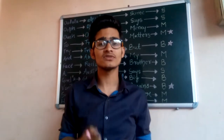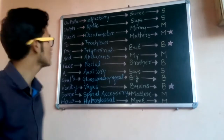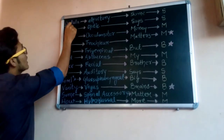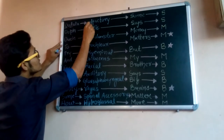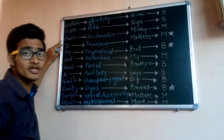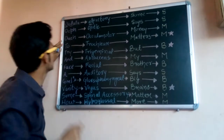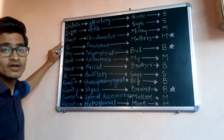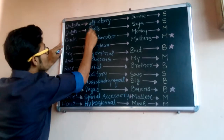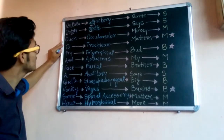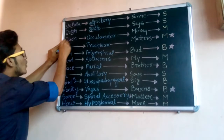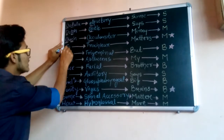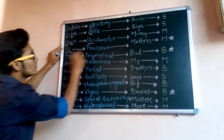Now I'll explain how we can identify the names of cranial nerves using this mnemonic. 'Oolala' contains O and L, so it means the starting two letters will be OL — that is olfactory nerve. After that, O and T means optic, which is the second pair. Then OC in 'out' means oculomotor. After that, T-O means trochlear.